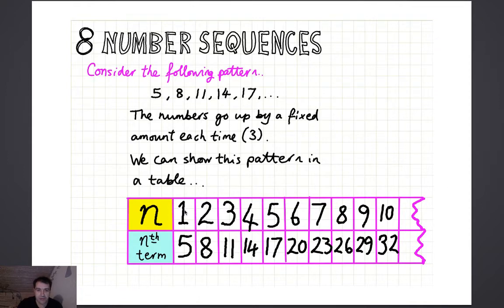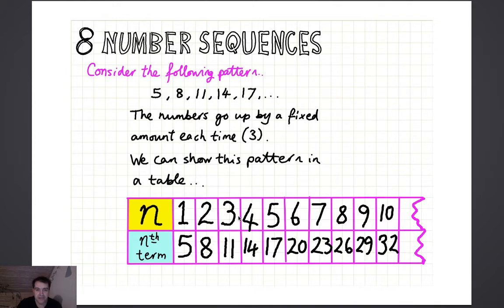I've got a table with positions 1, 2, 3, 4, 5, 6, 7, 8 — I've called those numbers N. The numbers in the sequence itself are the nth term. So the first term is 5, the second term is 8, the third term is 11, and so on. So I've got N and nth term.